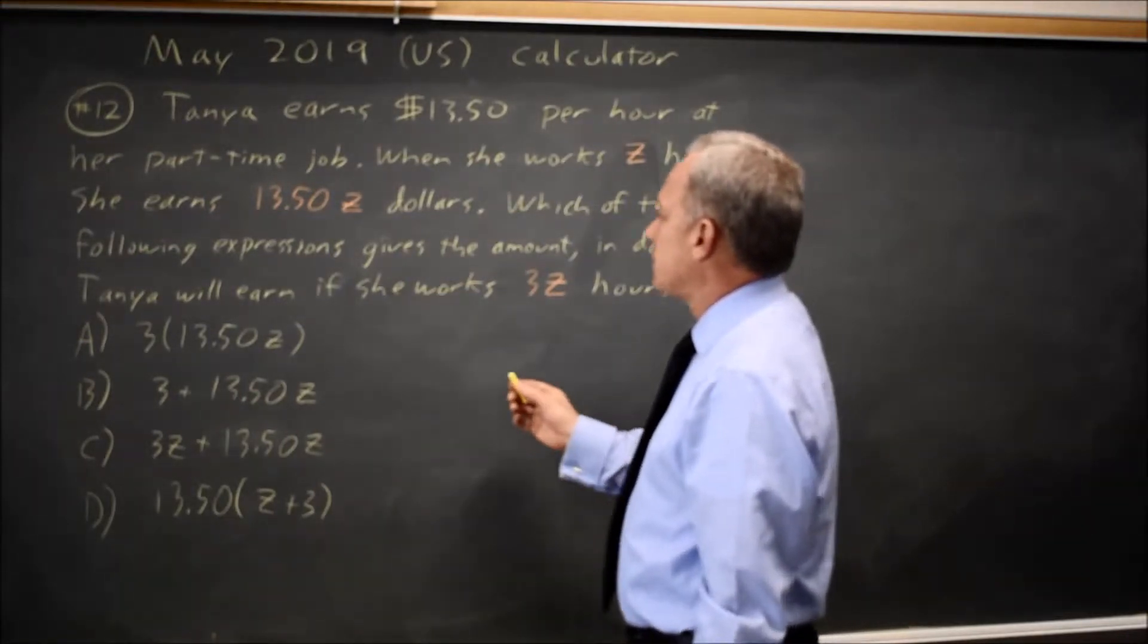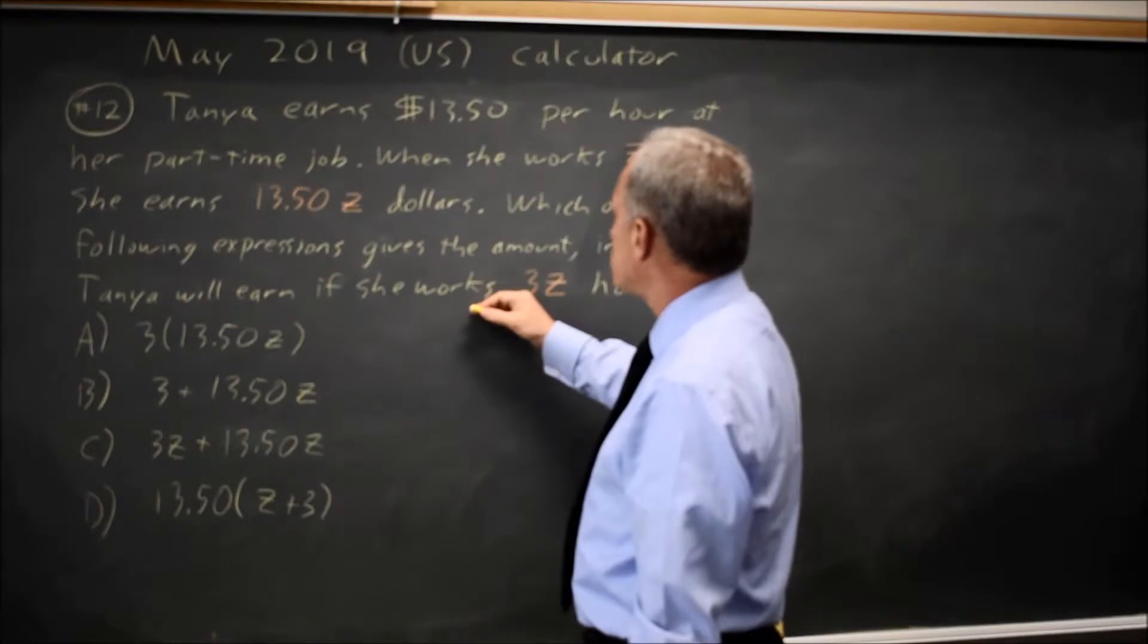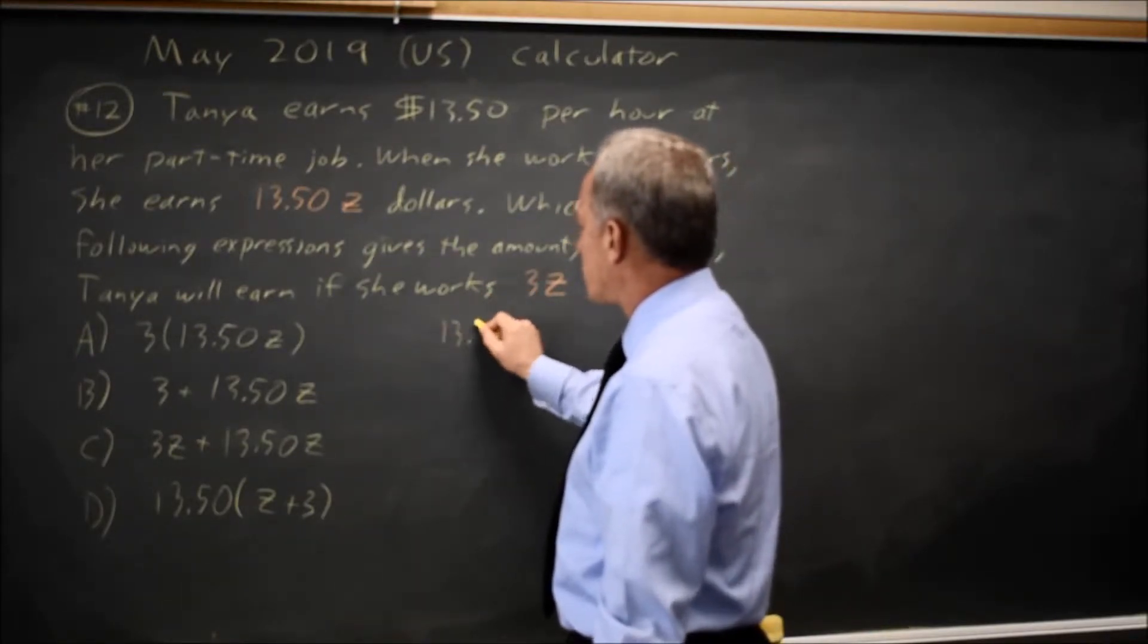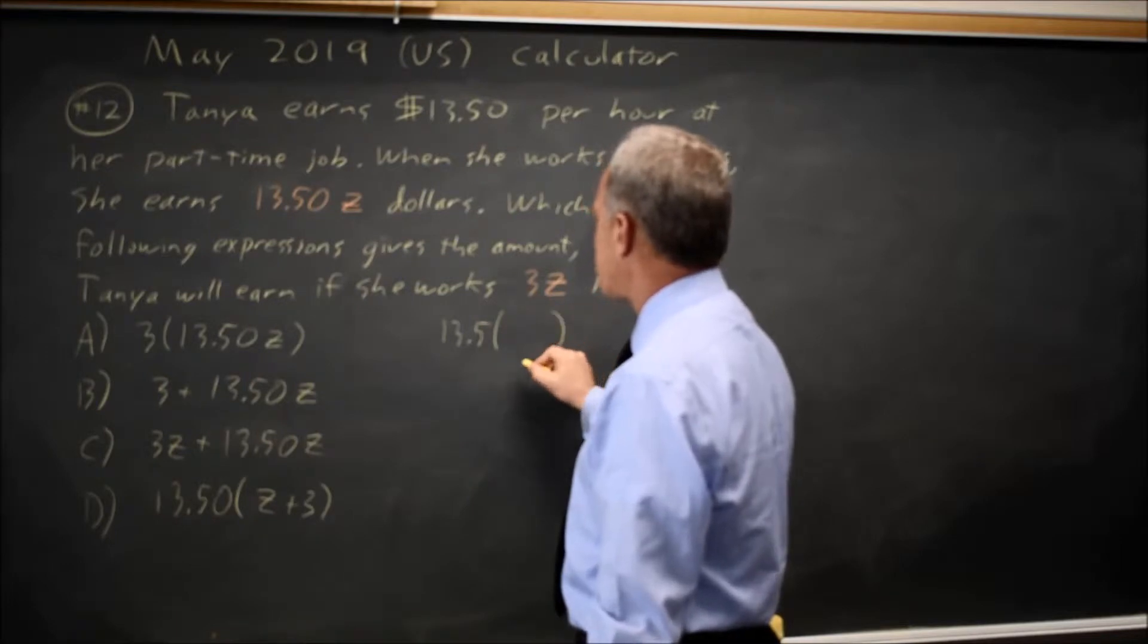One way to look at this is, they're asking how much will she earn if she works 3Z hours. She makes 13.5 times the number of hours worked.